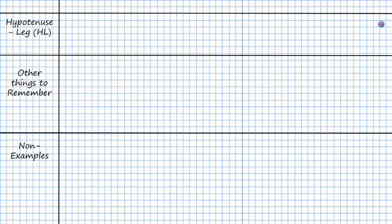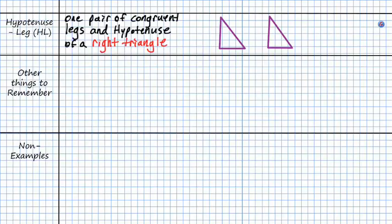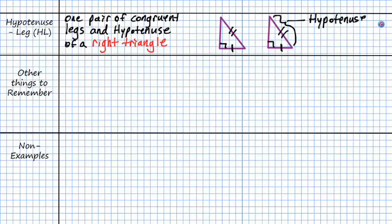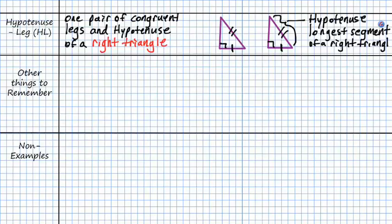The next theorem is hypotenuse-leg. This one is special because it applies specifically to right triangles only. We have our right angle, then one side is congruent and another side is congruent, and therefore the triangles will be congruent. Remember, the hypotenuse is the longest segment of a right triangle, and the legs are just the other two measures.